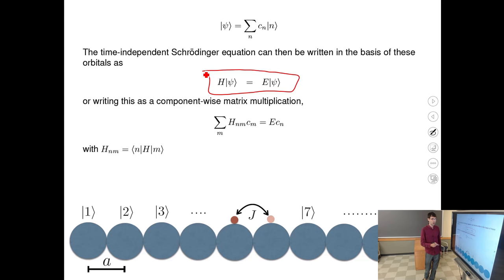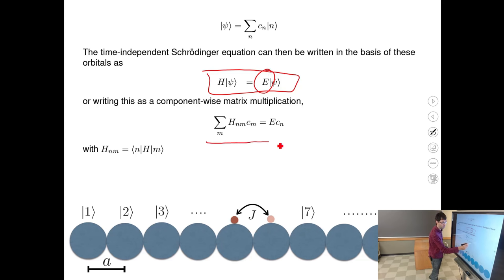We are looking for the spectrum — the eigenstates, the solutions of the Schrödinger equation. It is convenient to express the Hamiltonian in the basis of the same orbitals. The Hamiltonian is a matrix, and if you know all of its matrix elements, you know transitions between all possible n states.